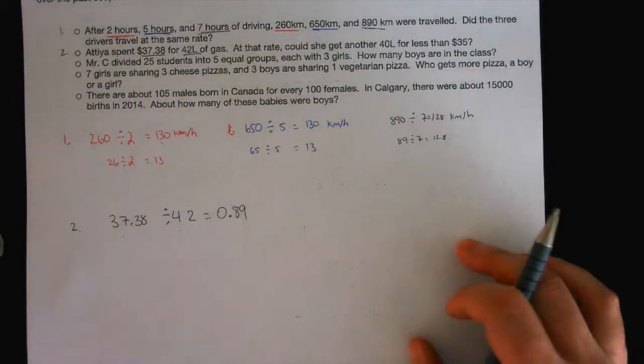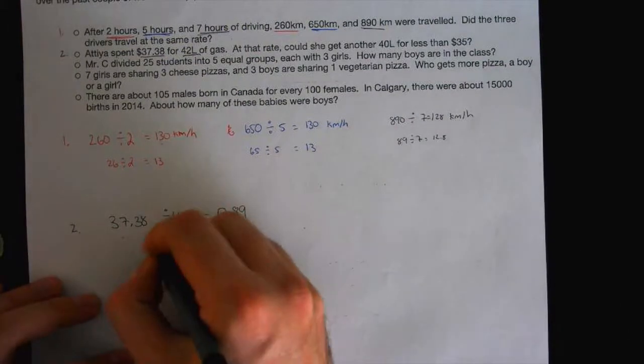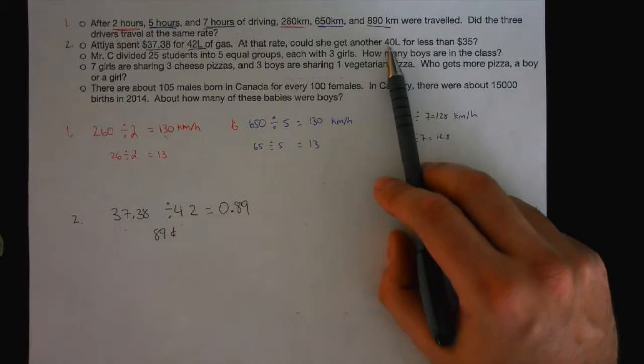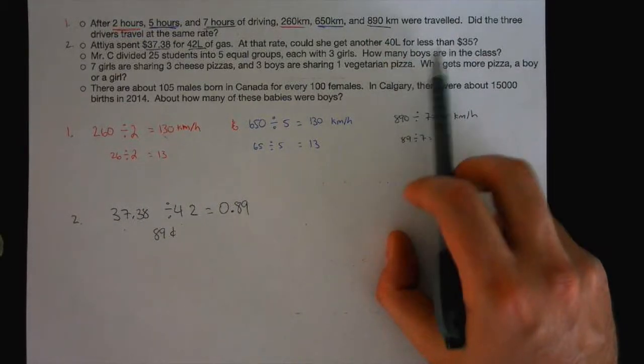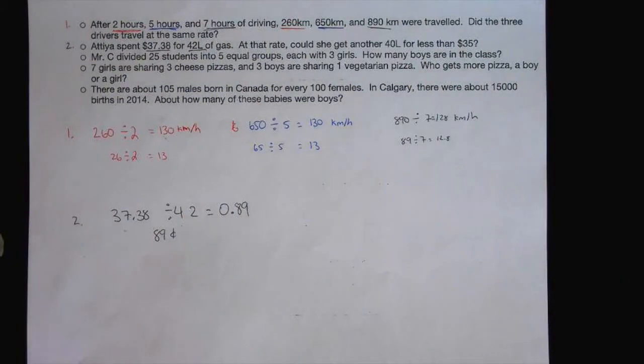So how much money is that? 0.89. What is that in money? So it's 89 cents a liter. So now the question becomes, can she get another 40 liters for less than $35? What do I need to do now? I need to do something now. What do I need to do?